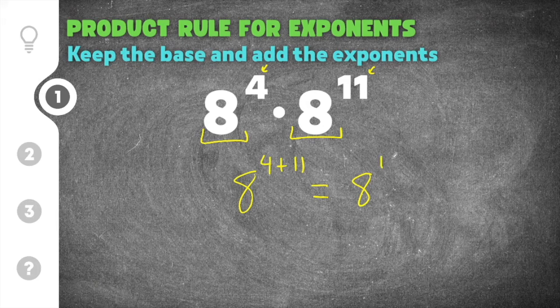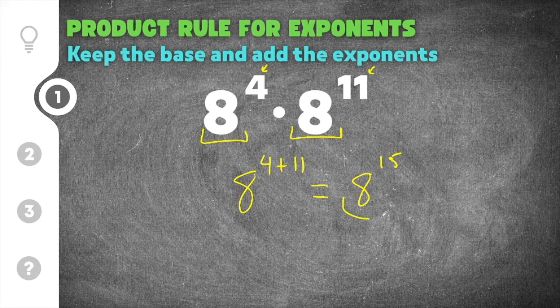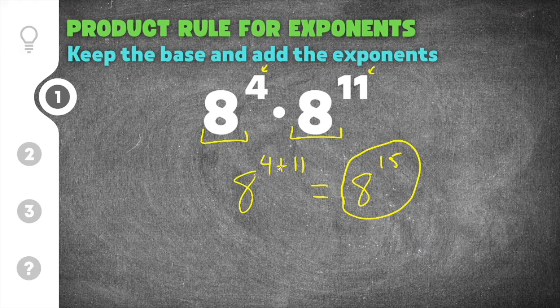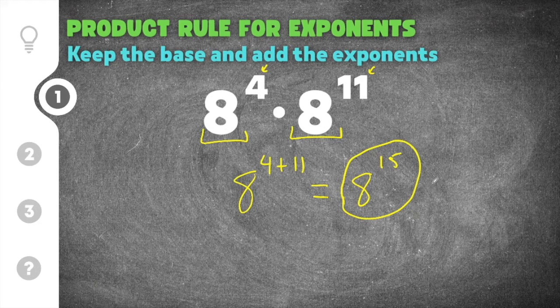Well, four plus eleven is fifteen, so our final solution is 8 to the fifteenth power because we keep the base the same and we add the exponents together.